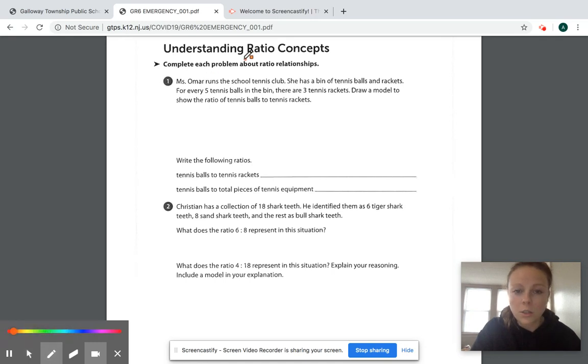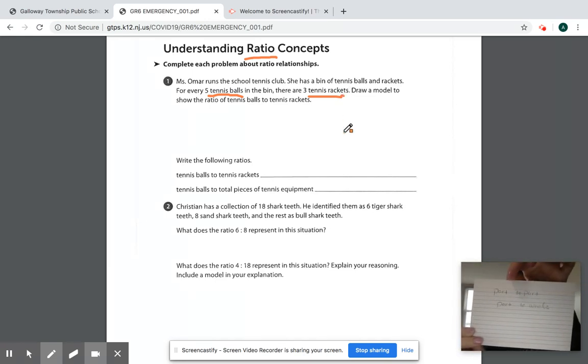Ratios are just a way to compare two quantities. So in this example here, we're comparing tennis balls to tennis rackets. That would be considered a part-to-part ratio. We're comparing one part of something to another part.